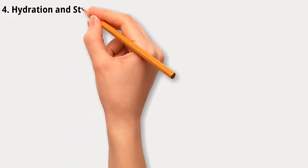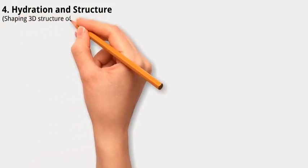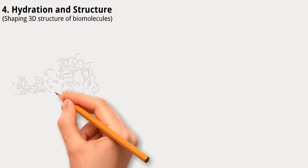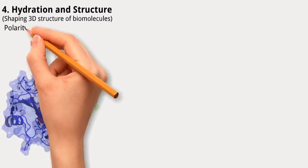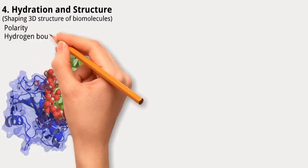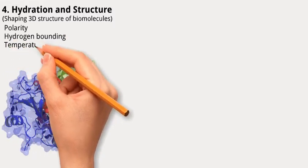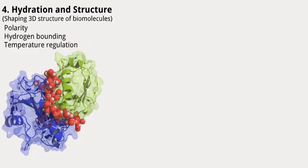Four, hydration and structure. Water plays a crucial role in shaping the structure of biomolecules, like proteins and DNA, in living organisms. This is because of its polarity and ability to form hydrogen bonds, in addition to its ability to regulate temperature, which is crucial for maintaining the shape and structure of biomolecules, preventing them from getting messed up when the temperature changes.